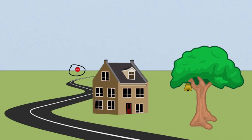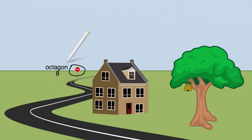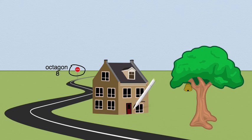Let's go ahead and look at our picture again to find another polygon. Now that we've seen our stop sign is an octagon because it has eight sides, let's go ahead and try to look for another polygon. This time, we're going to zoom in on this window.